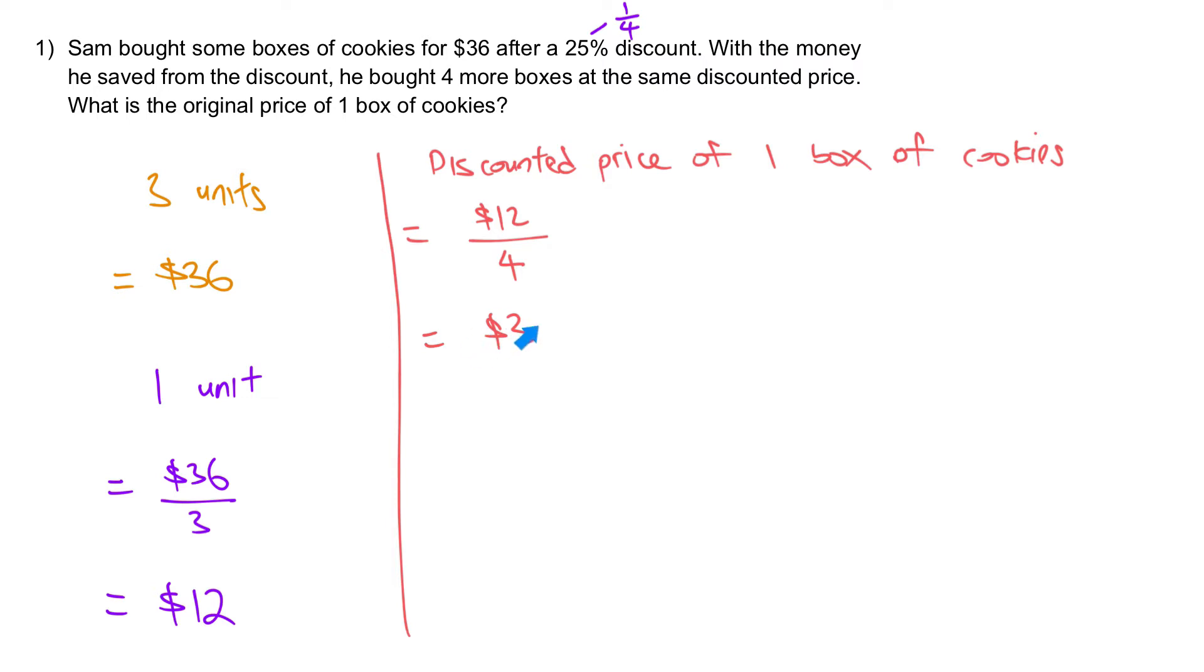Now think about it, this box of cookies is actually after a 25% discount. Therefore, to find back the original price of 1 box of cookies, we will take the $3 divided by 75 to figure out what is 1%. After that, we times 100 to get the 100%, which is the original price. And that will give you $4 as the answer.